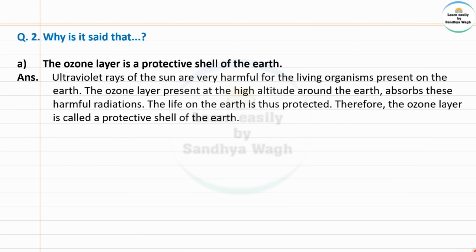The ozone layer present at the high altitude around the earth absorbs these harmful rays and does not allow them to reach the earth. The life on the earth is thus protected. Therefore the ozone layer is called a protective shell of the earth.